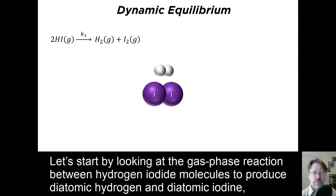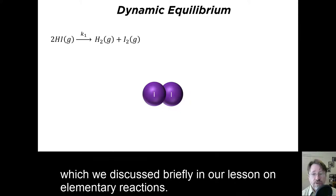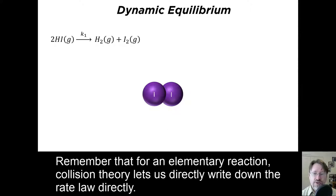Let's start by looking at the gas phase reaction between hydrogen iodide molecules to produce diatomic hydrogen and diatomic iodide, which we discussed briefly in our lesson on elementary reactions. Remember that for an elementary reaction, collision theory lets us write down the rate law directly.